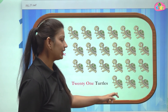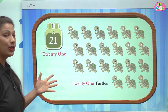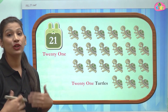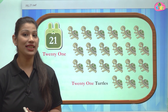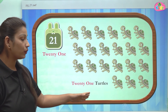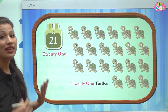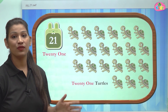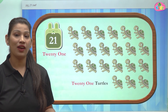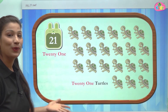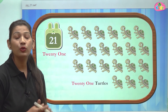18, 19, 20, 21 — these are 21 turtles. 21 is very easy to write: you just have to write 20 and 1. You all know the number name of 20, and then you write 1 — that gives you 21. After 21 there comes number 22.